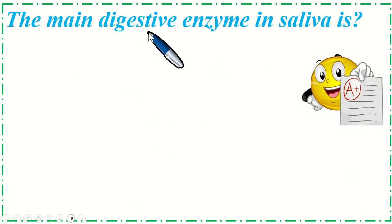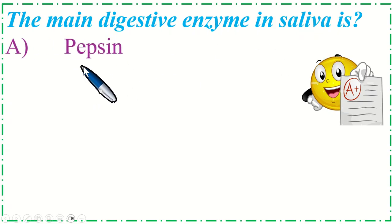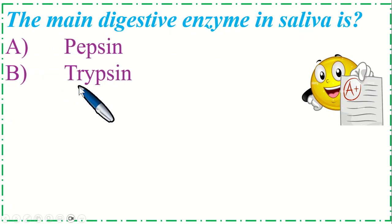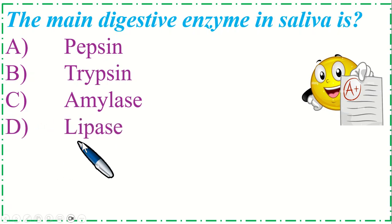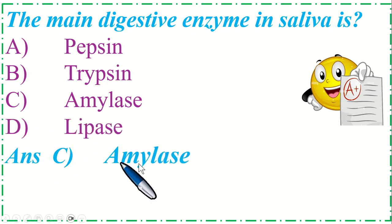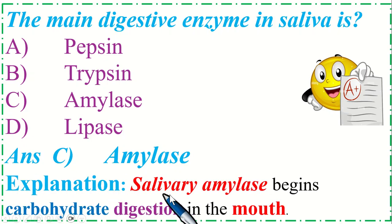The main digestive enzyme in saliva is: Option A: Pepsin, B: Trypsin, C: Amylase, and Option D: Lipase. The correct option is C, Amylase. Salivary amylase begins carbohydrate digestion in the mouth.